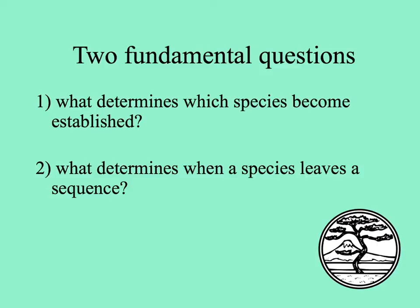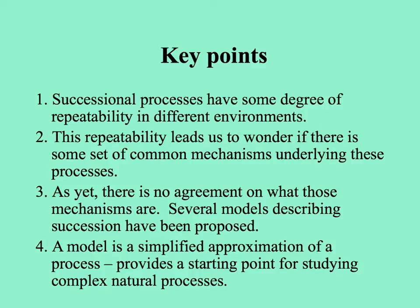In succession, what determines which species leave a successional sequence? It's interesting that succession proceeds similarly in similar systems in different places. This repeatability suggests some set of common underlying mechanisms, though people don't agree on what those mechanisms are—it's one of the most interesting areas in plant ecology. Keep in mind that these models are just simplified approximations, not meant to explain everything, but to provide a starting point for studying something as complex as succession.